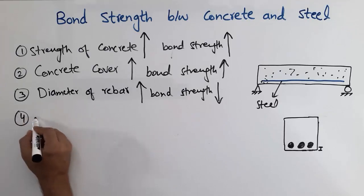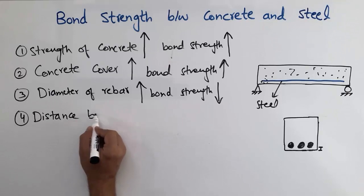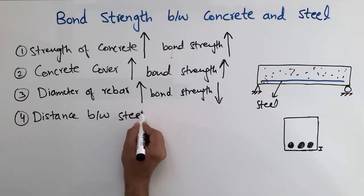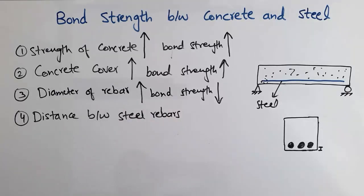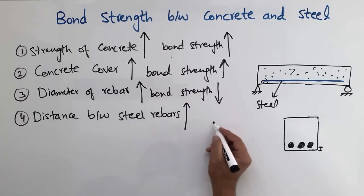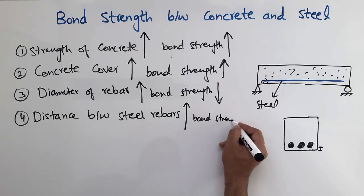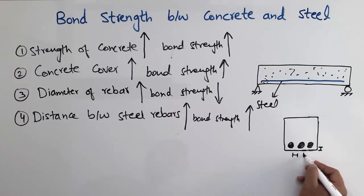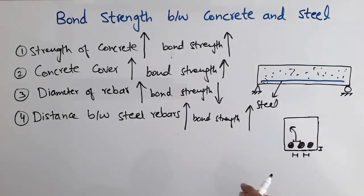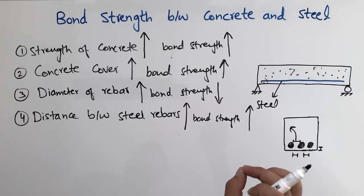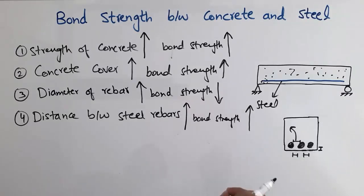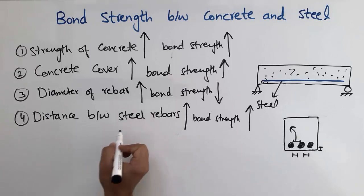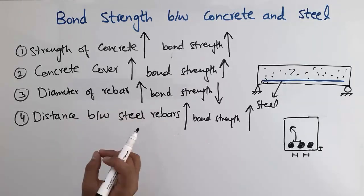The fourth factor is the distance between steel rebars. If the distance between the bars is higher, then our bond strength is also higher. If the rebars are close enough to each other, there is no space for the concrete to flow inside, so we have low bond strength. If the distance is higher, the concrete can easily flow and helps make a good bond strength between the concrete and the steel.